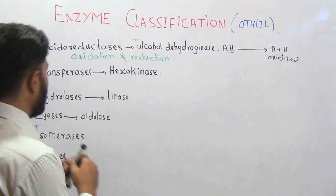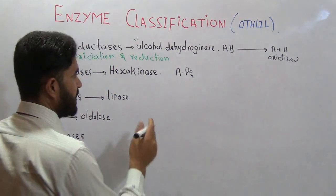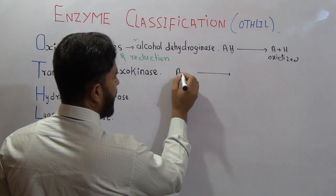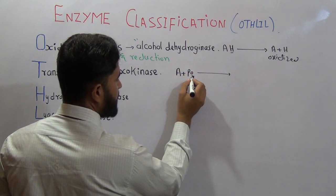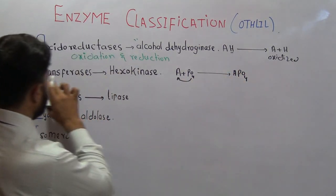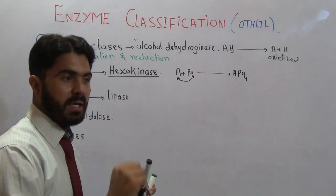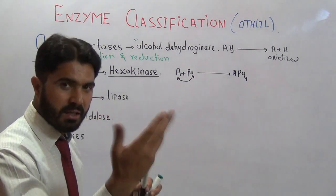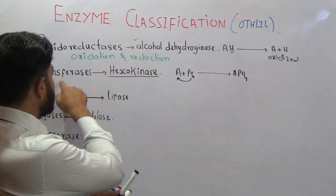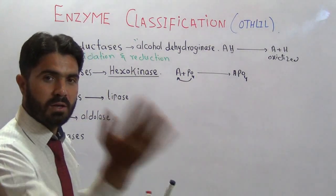Transferases are those enzymes involved in group transfer. For example, molecule A can be combined with a phosphate group, and the enzyme that helps in transferring the phosphate and attaching it to A is called a transferase. The example of a transferase is hexokinase, which transfers a phosphate group. Other transferases transfer methyl groups or other groups. As the name indicates, transferases transfer a group from one molecule to another.